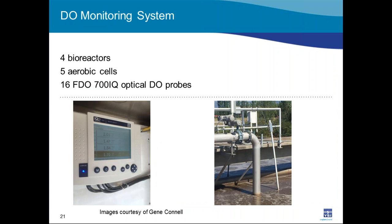The DO monitoring system consists of 16 optical DO probes installed in four bioreactors, each having five aerobic cells. A picture shows one DO probe installed at the end of a PVC pipe in the aeration basin, with the air drop leg and air control valve also visible — an important feature of the system configuration.